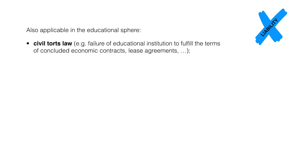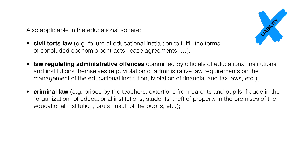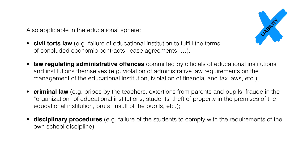Liability can arise in the educational sphere based on civil torts law, such as failure of the educational institution to fulfil the terms of contracts; administrative law, including offences committed by officials of educational institutions such as violation of financial and tax laws; criminal law, such as bribes requested by teachers; and disciplinary regulations, such as failure of students to comply with the requirements of school discipline.